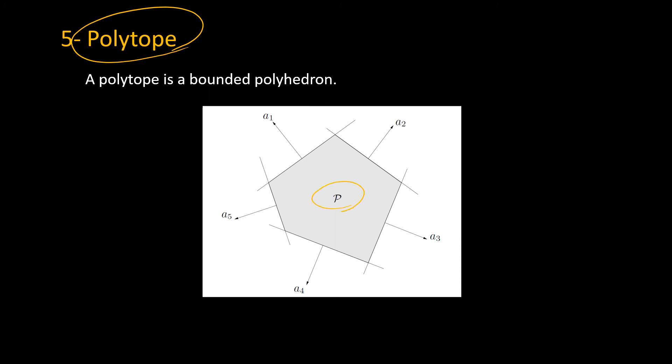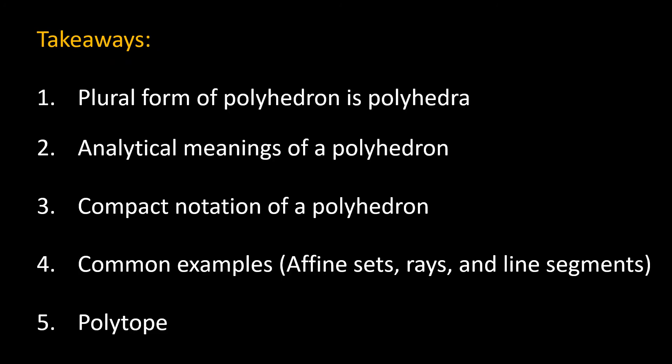What are the takeaways? We learned that the plural form of polyhedron is polyhedra. We learned a polyhedron is the solution set of a finite number of inequalities and equalities. Now we know how to write a polyhedron in a compact form. Also, we saw a couple of examples like affine sets, rays, and line segments. Finally, we learned a bounded polyhedron is called a polytope.